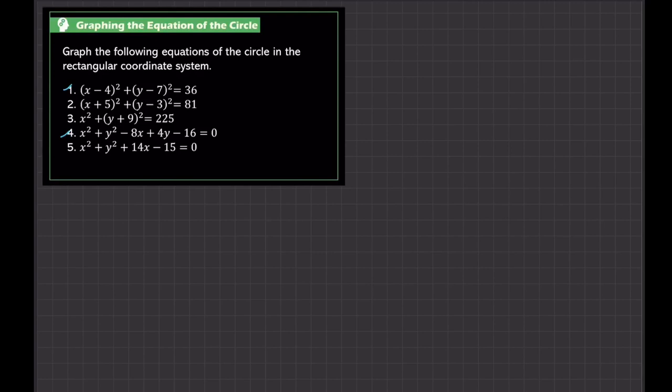Let's graph number 1. To graph a circle given its equation, we need some information about the center and radius. But we've already identified the center and radius. For number 1, we've solved this in the previous video, so the center is (4,7) and the radius is 6.